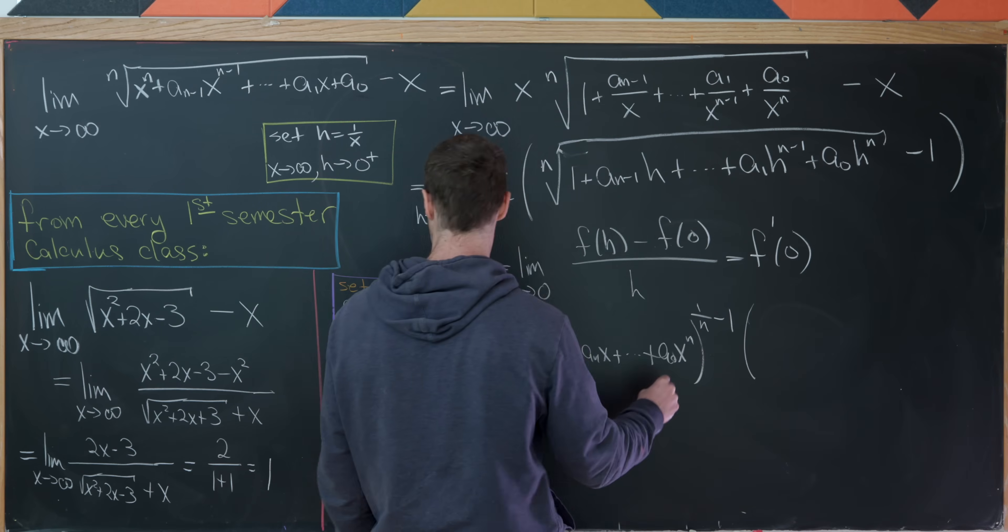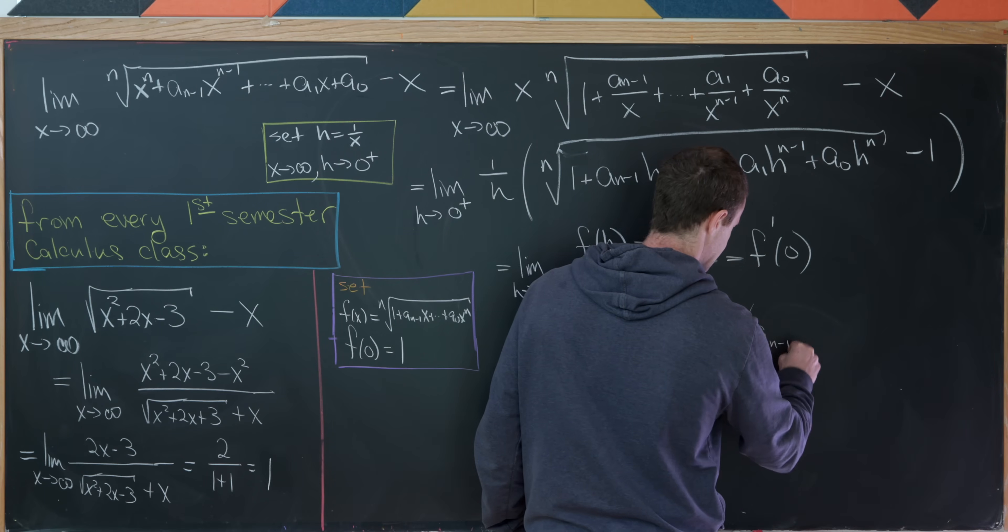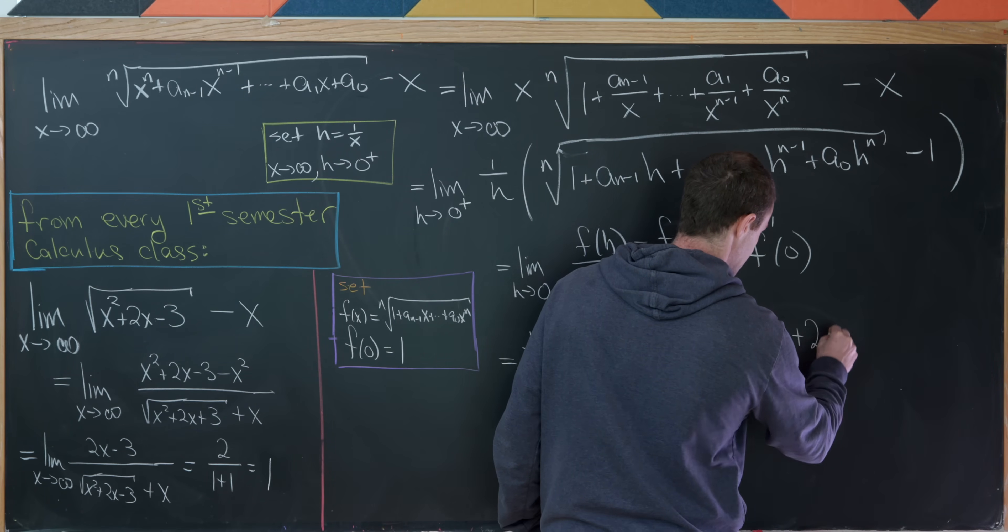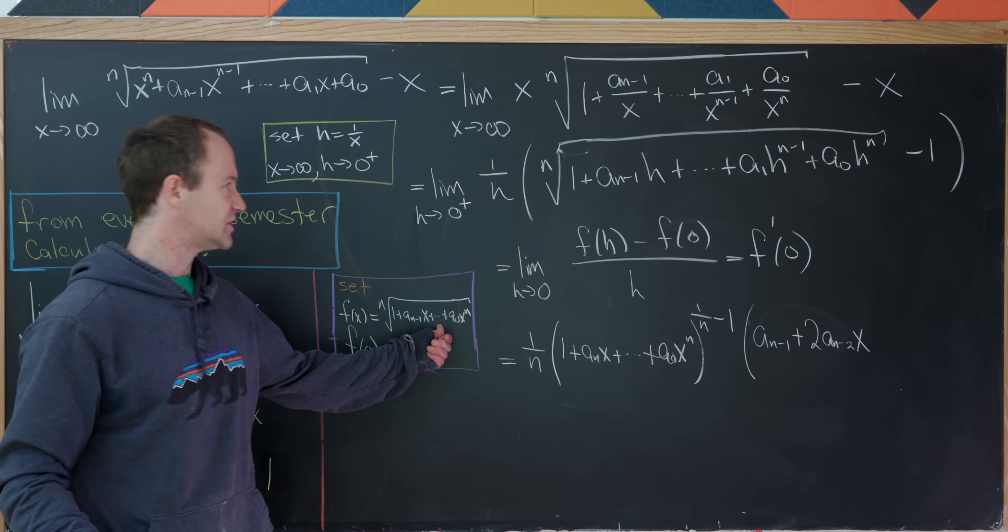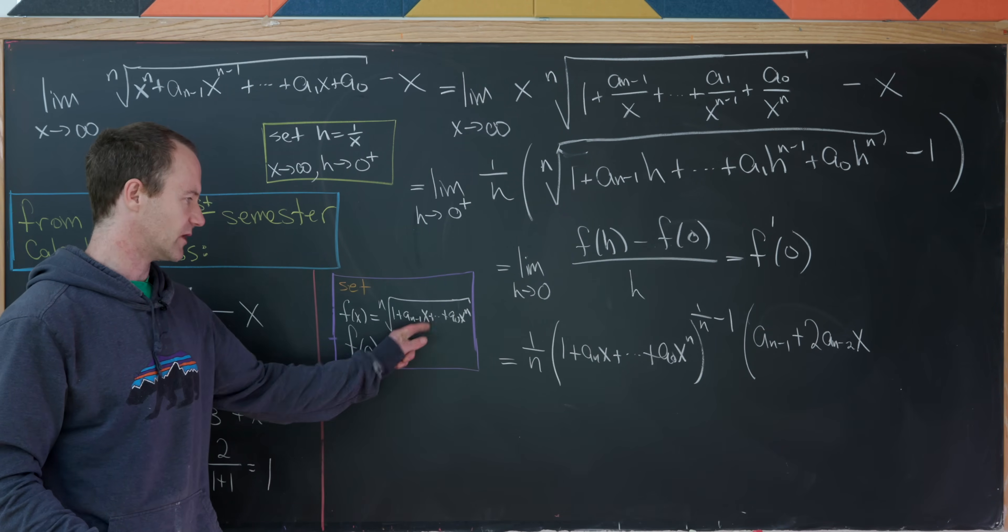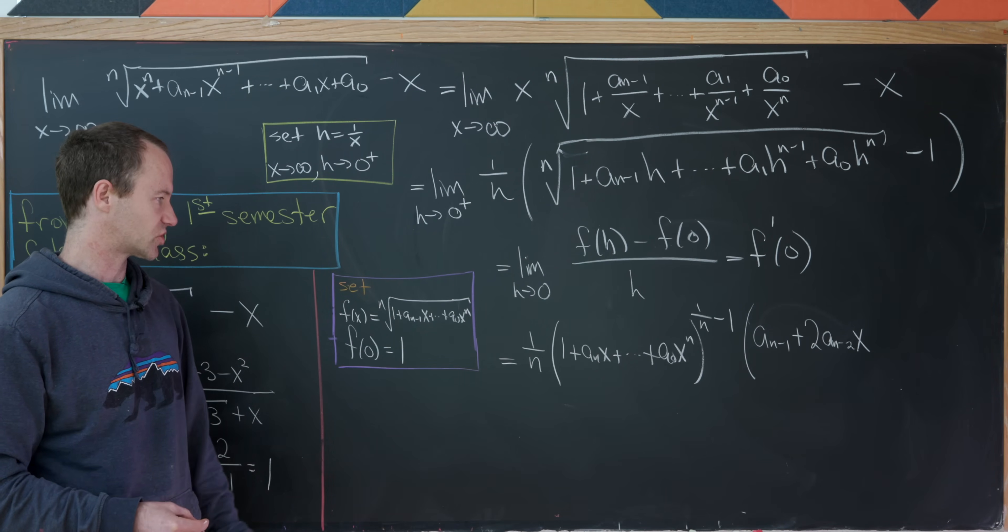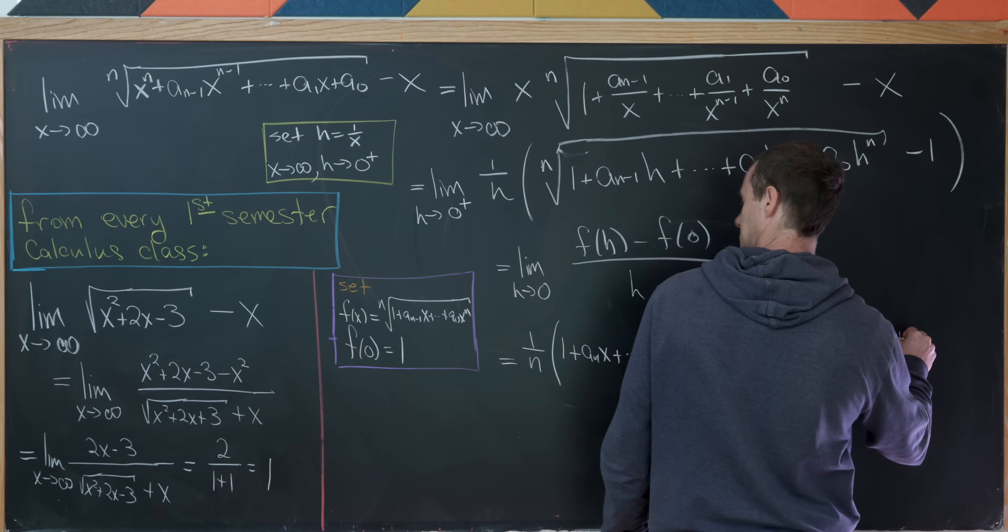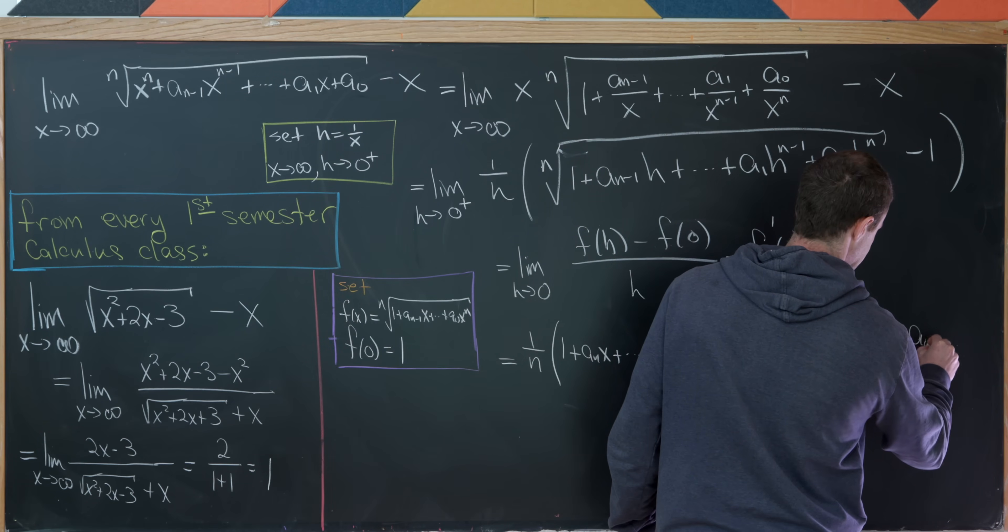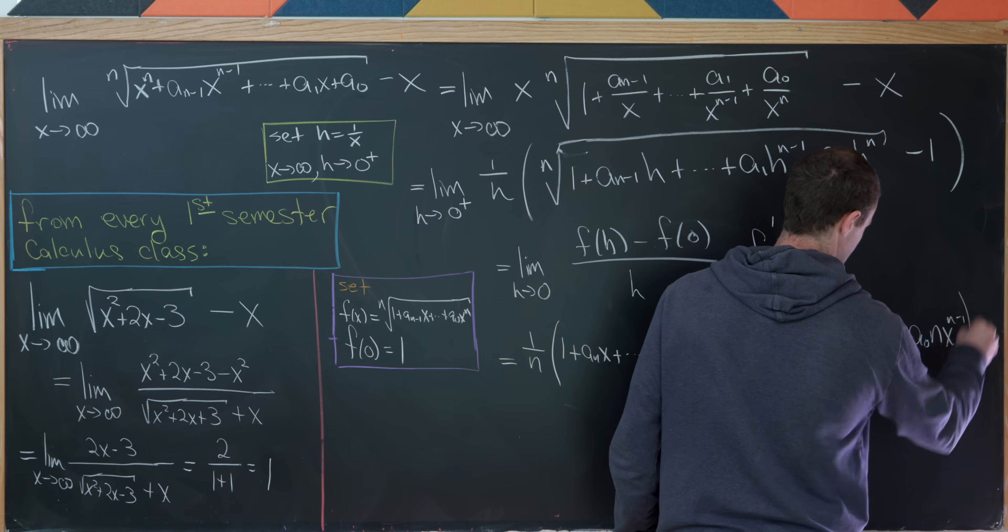And then we have to multiply by the derivative of the inside by the chain rule. So the derivative of the inside will be a sub n minus 1 plus 2 a sub n minus 2 times x. That a sub n minus 2 is attached to an x squared. I haven't written that there, but that follows from the structure of this thing.